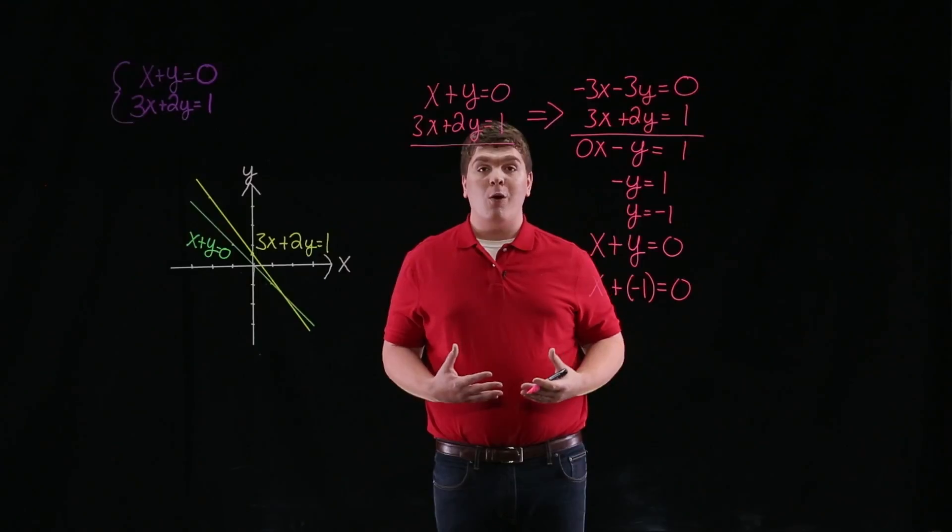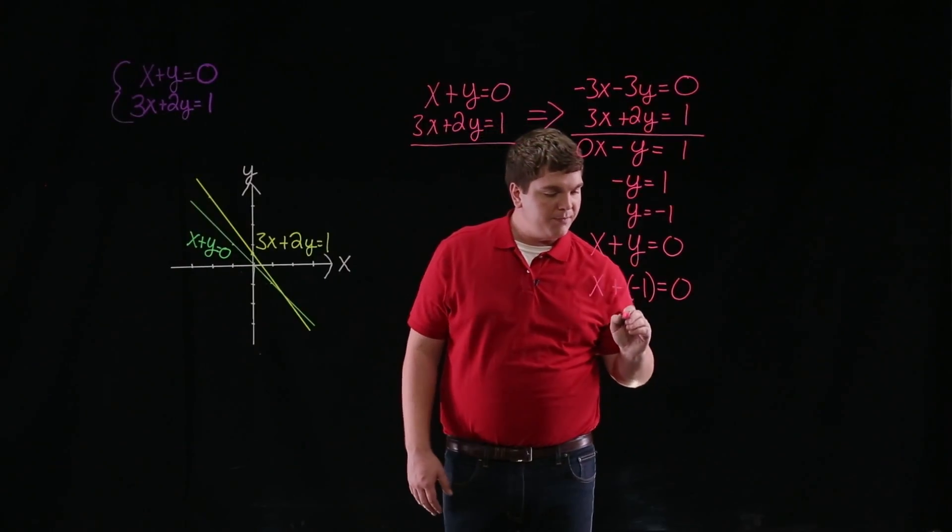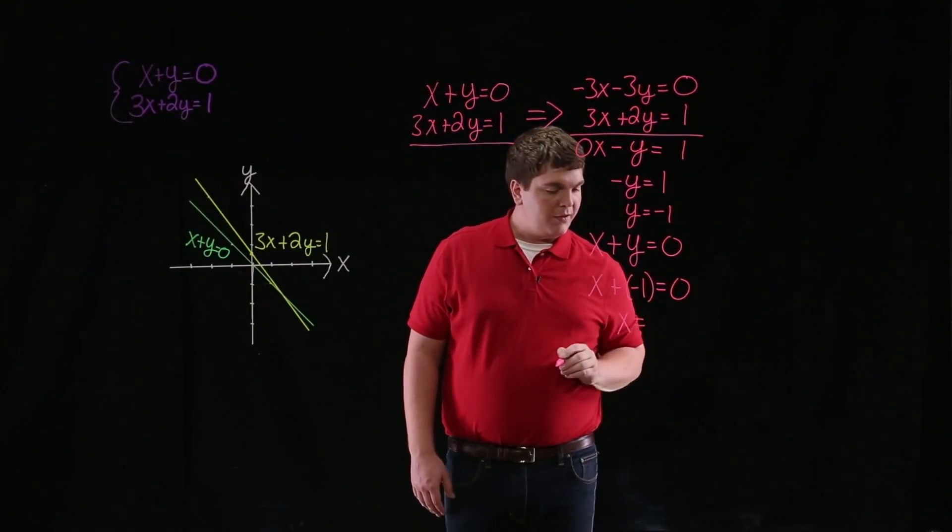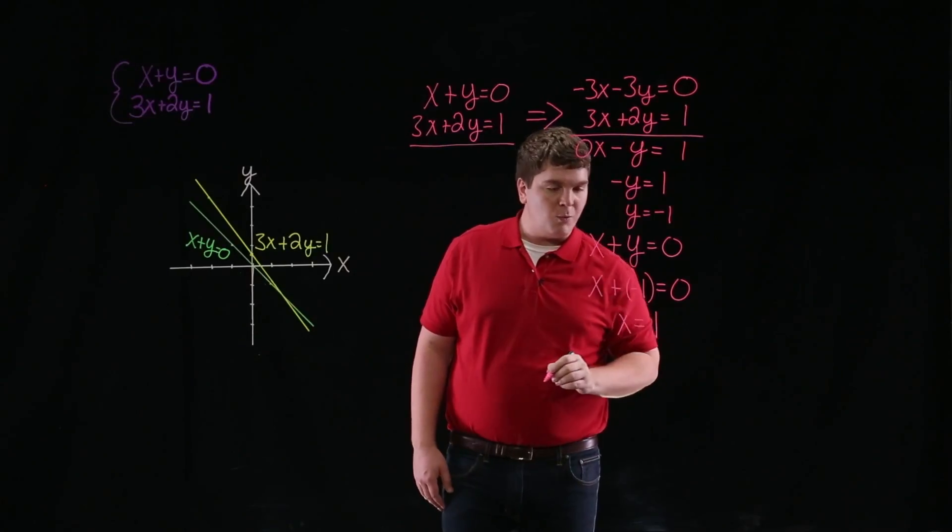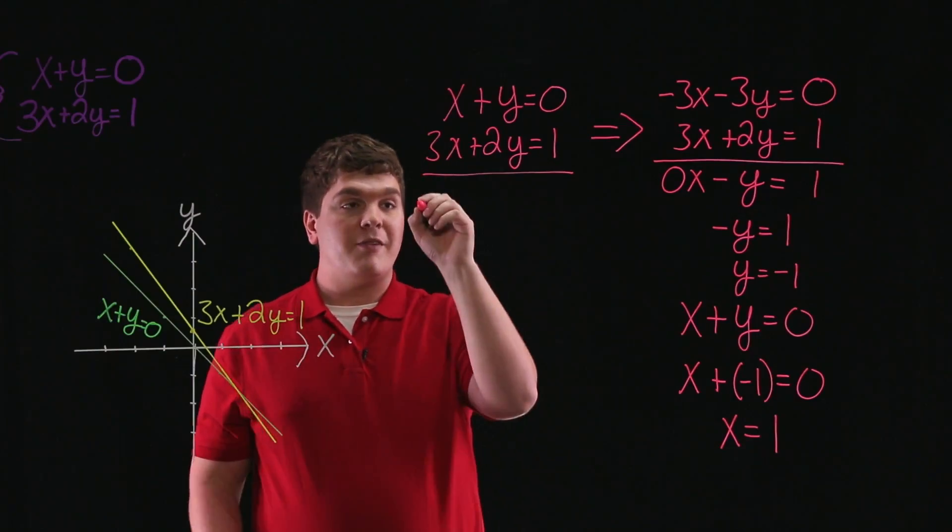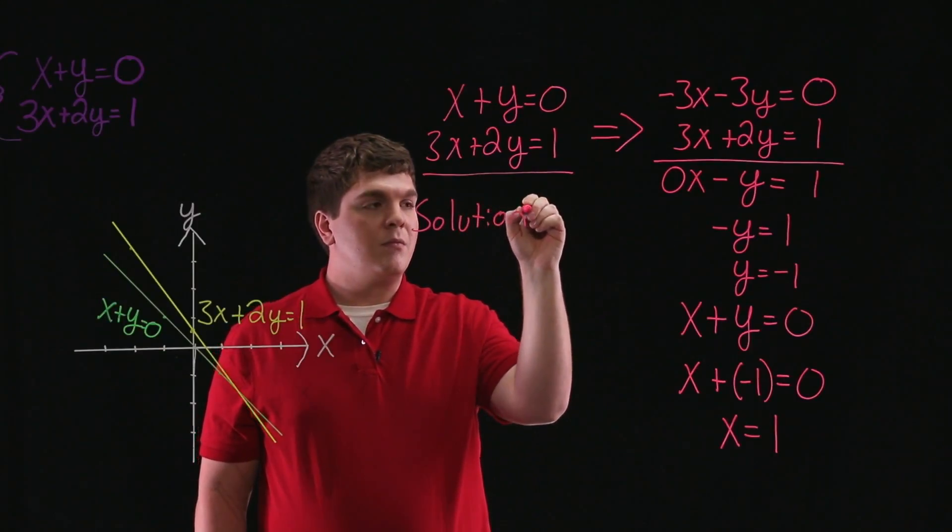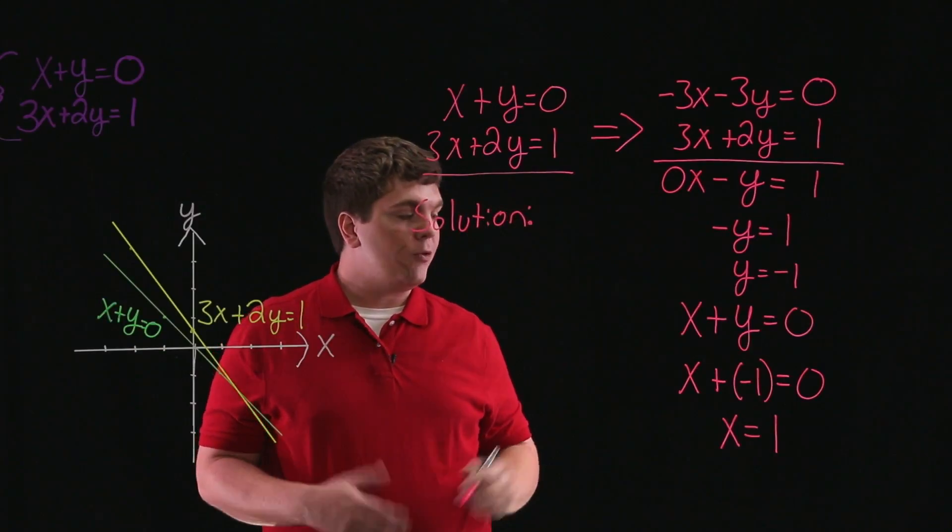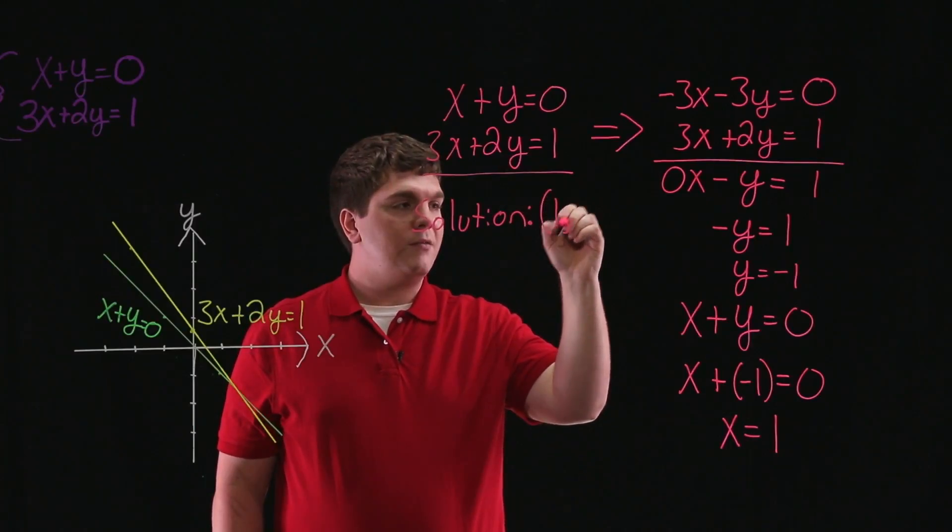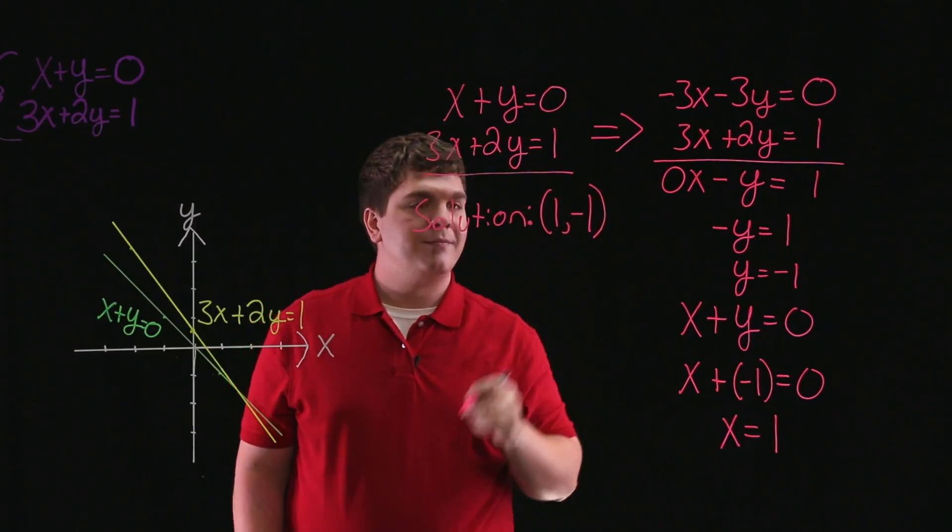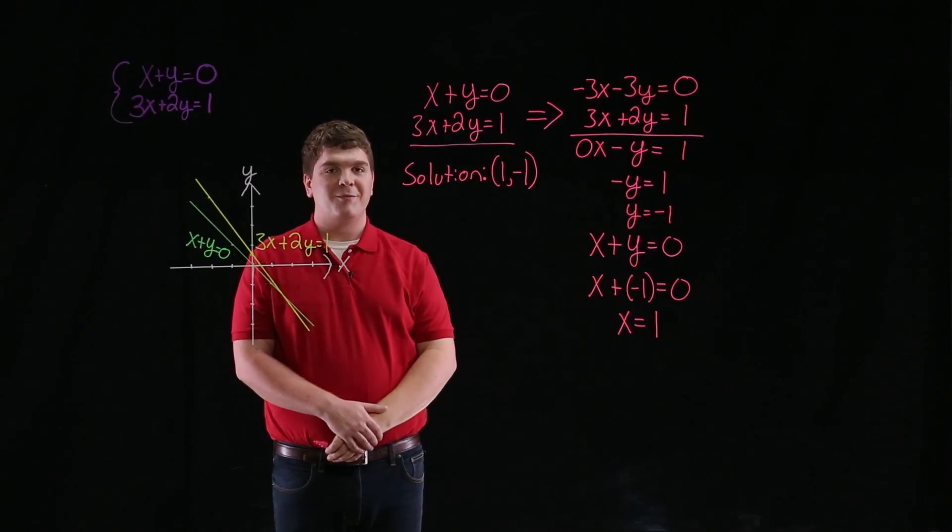And here we can add 1 to both sides of the equation, leaving us with x equals 1. So the solution to the system of equations is the ordered pair 1, negative 1. Thank you.